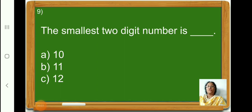The smallest 2-digit number is — children, 3 options are given here. We have to find out the smallest 2-digit number. Which is the smallest 2-digit number? Yes, 10. So, let us put a tick on option A, 10.